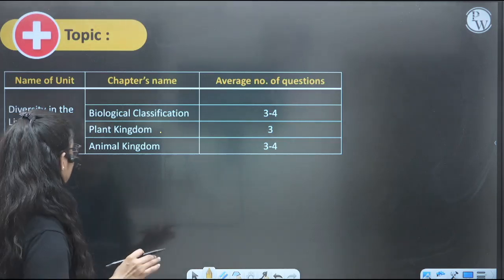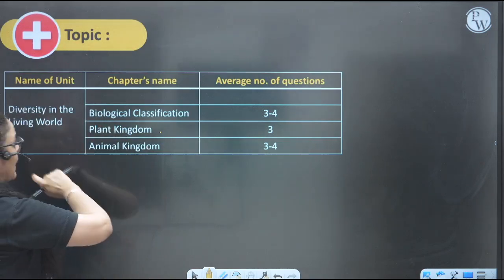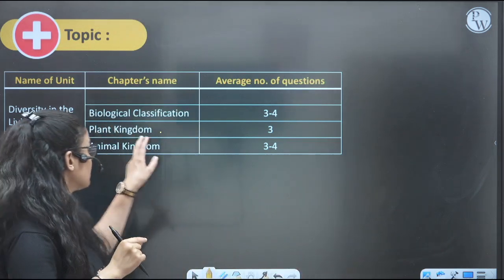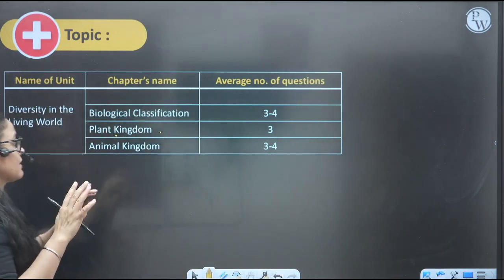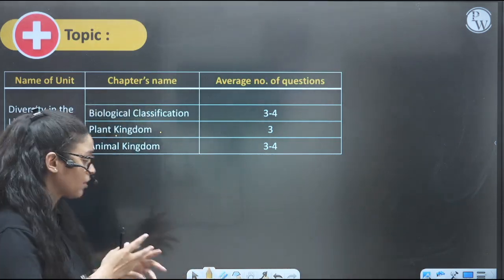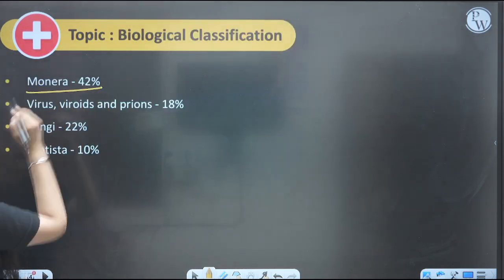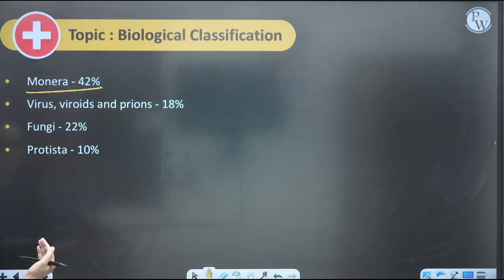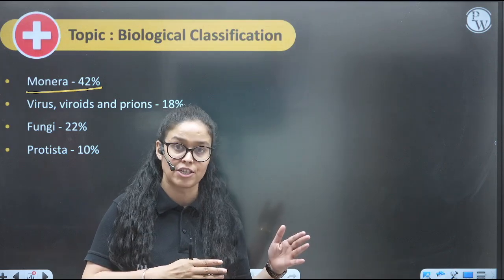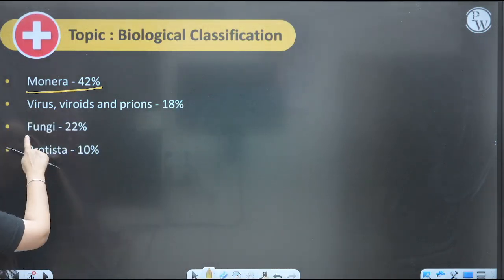This is the first unit of Class 11 — Diversity. From the first chapter, Biological Classification, you can expect 3–4 questions. When we see Biological Classification, the maximum questions come from Monera, based on previous year analysis, and then from Fungi, which is also very important.